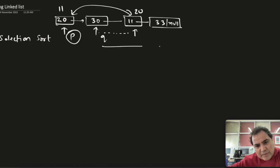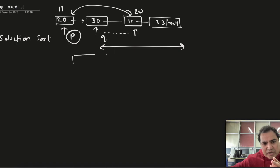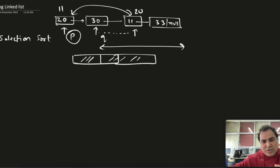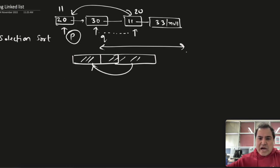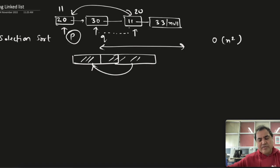For every value of p, q will keep traversing the other part of the list. Slowly, we will have a sorted sub-array on one side and unsorted on the other, and everything will get sorted. The complexity for this algorithm will be O(n²) because for every value of p we are traversing the entire linked list.